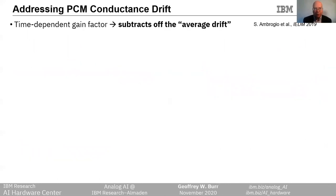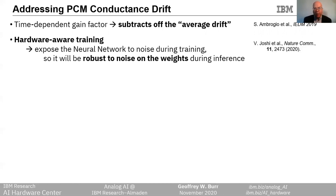Fortunately, conductance drift is an effect that slows down in time, shown here as straight lines on a log-log plot of conductance versus time, with a slope nu that is usually 0.1 or less. We can use a time-dependent gain factor to help subtract off the average drift, at least for a while, although eventually we'll have to worry about amplification of background noise. Unfortunately, drift also exhibits cycle-to-cycle stochasticity ascribed to those same polycrystalline grains. Hardware-aware training can help us a lot here — exposing the network to noise during training so it will be more robust to noise on the weights, including from drift variability, during inference.